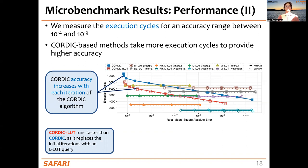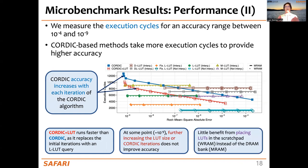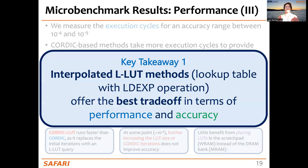For CORDIC-based methods, we observe that more execution cycles are needed for higher accuracy because CORDIC is iterative — more iterations are required for higher precision, as shown by the blue and red lines in the plot. CORDIC plus LUT runs faster than plain CORDIC because it replaces the initial iterations with an LDXLUT query. We also observe that around 10^-9, increasing the LUT size or CORDIC iterations no longer improves accuracy, as this is limited by the precision of the floating-point format itself. Additionally, there is little benefit from placing look-up tables in the scratchpad versus the MRAM bank, so it makes sense to keep look-up tables in MRAM and reserve WRAM for operands. Key takeaway: interpolated LDXLUT methods offer the best trade-offs in terms of performance and accuracy.